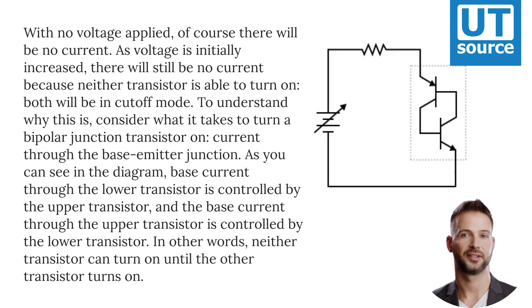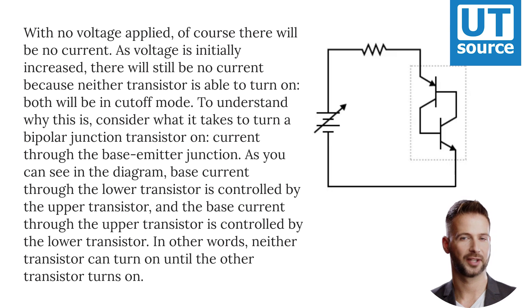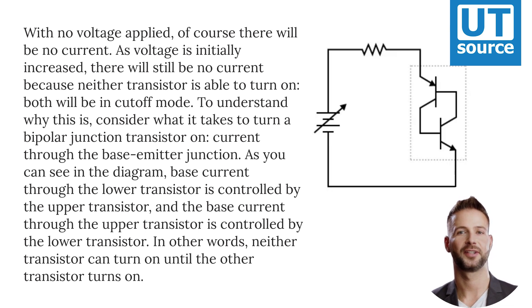As you can see in the diagram, base current through the lower transistor is controlled by the upper transistor, and the base current through the upper transistor is controlled by the lower transistor. In other words, neither transistor can turn on until the other transistor turns on.